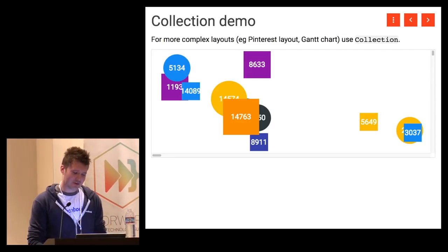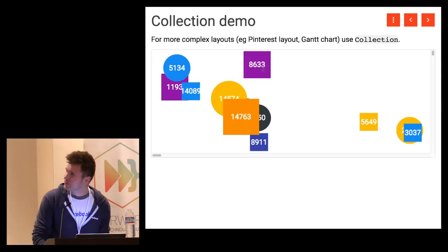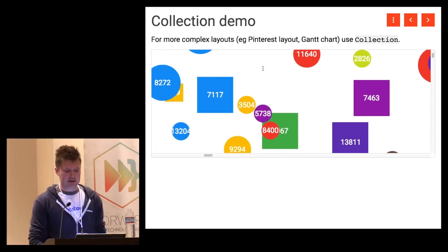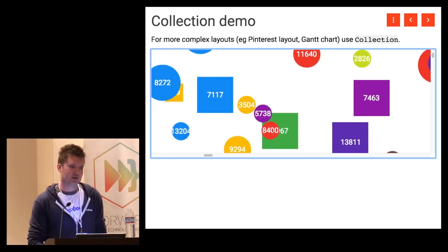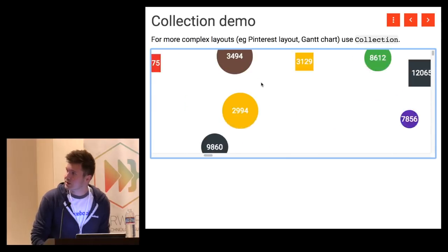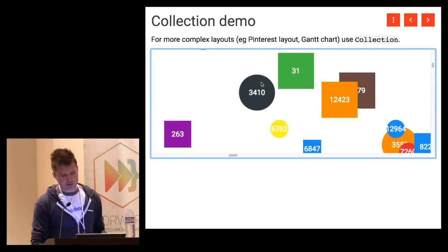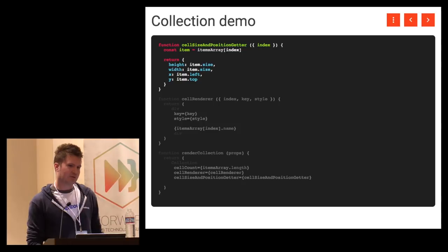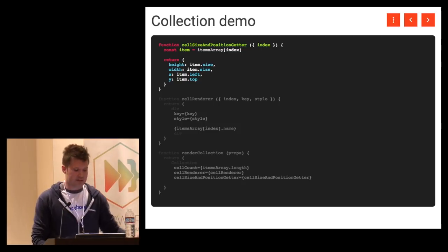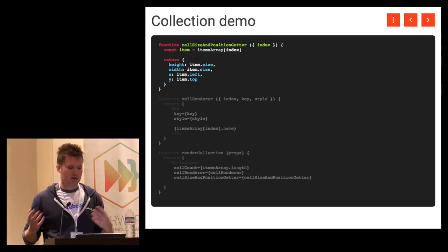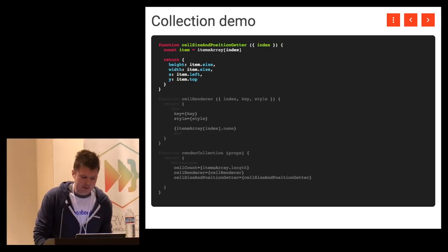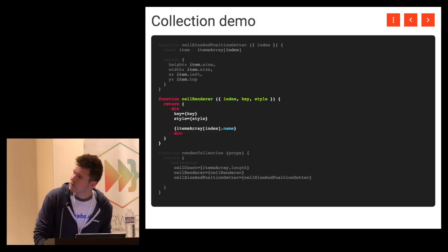The Collection component lets you use data where the position in the index doesn't match the position on the screen, and it still windows what's displayed to only show what's in the scrollable viewport. It's a little more complex to use — you give it a function responsible for telling it the position of the data, which has to be inferred from the data itself. If you're building a Gantt chart or a burndown chart, you can infer this from something like the date in your item. And then a renderer, which looks the same as a grid renderer.